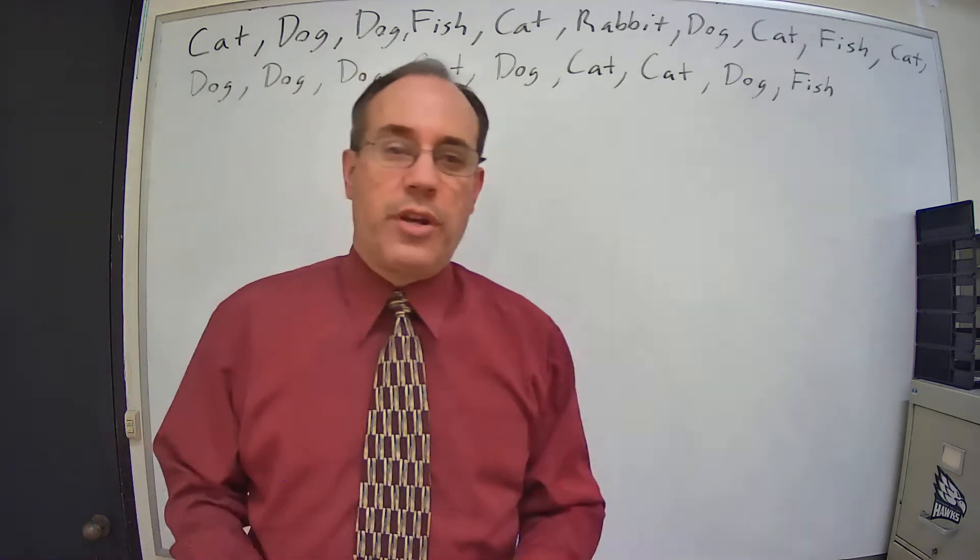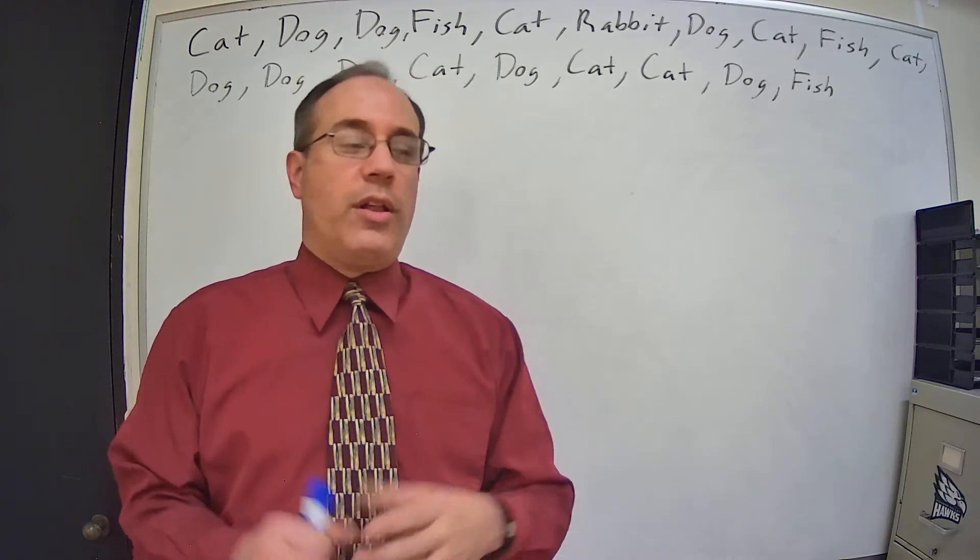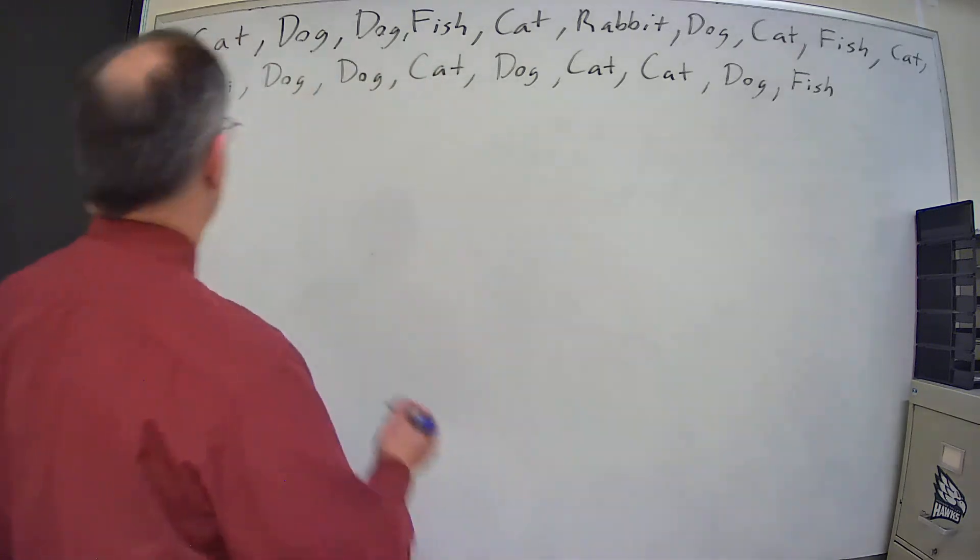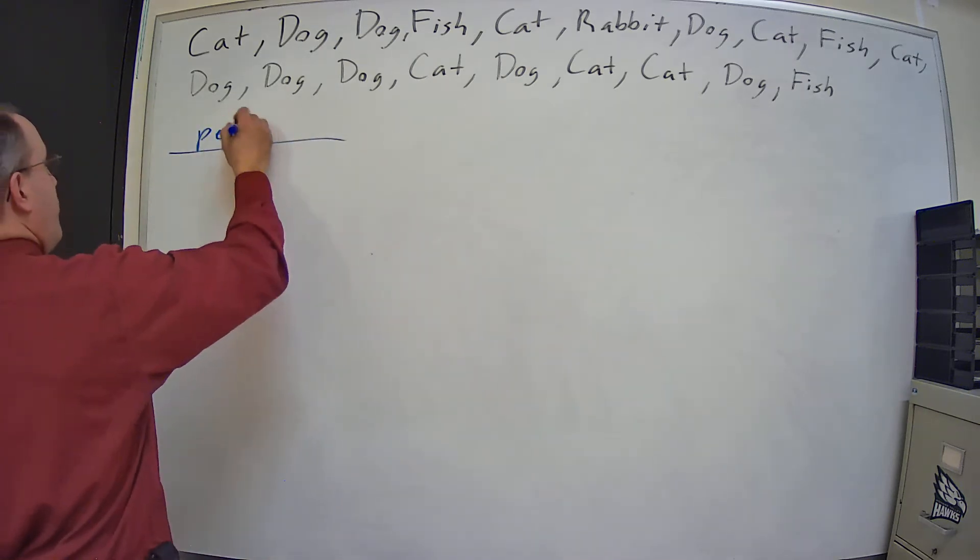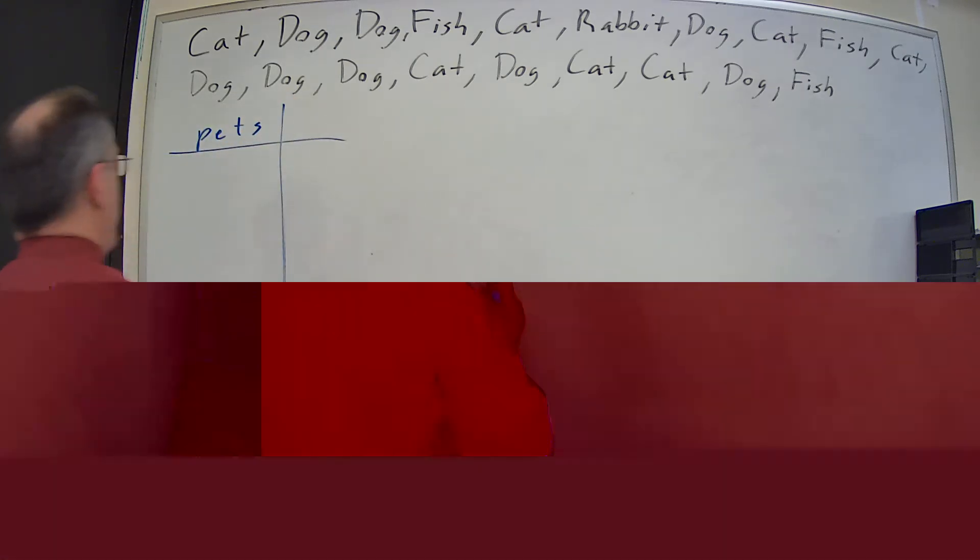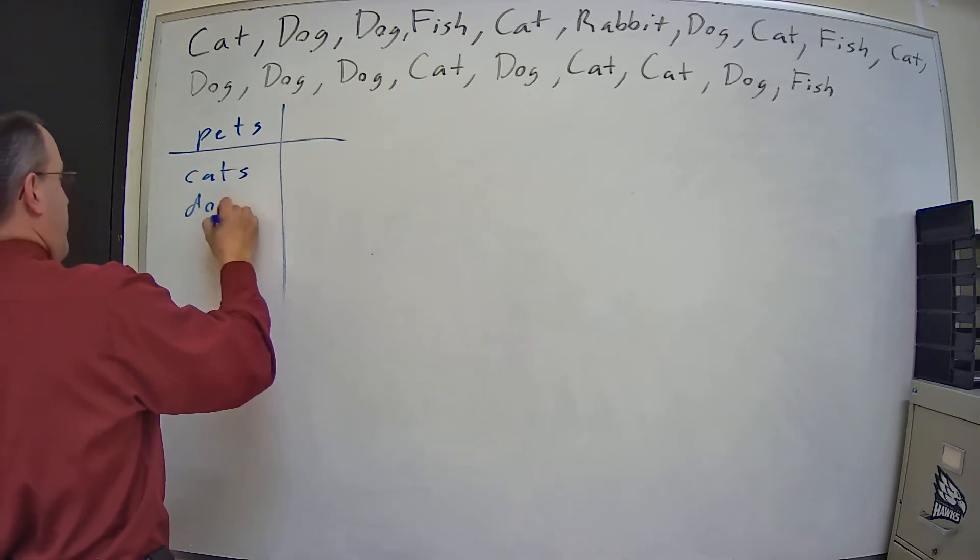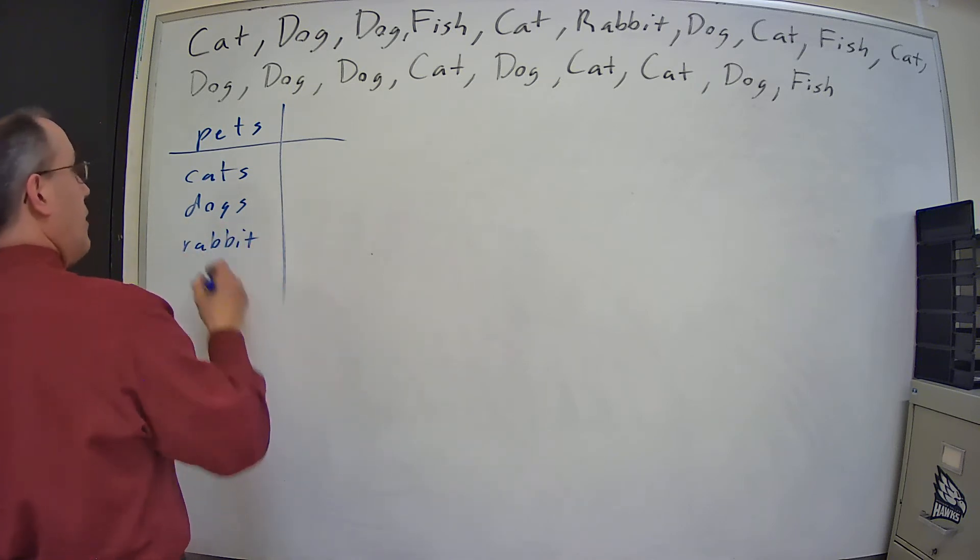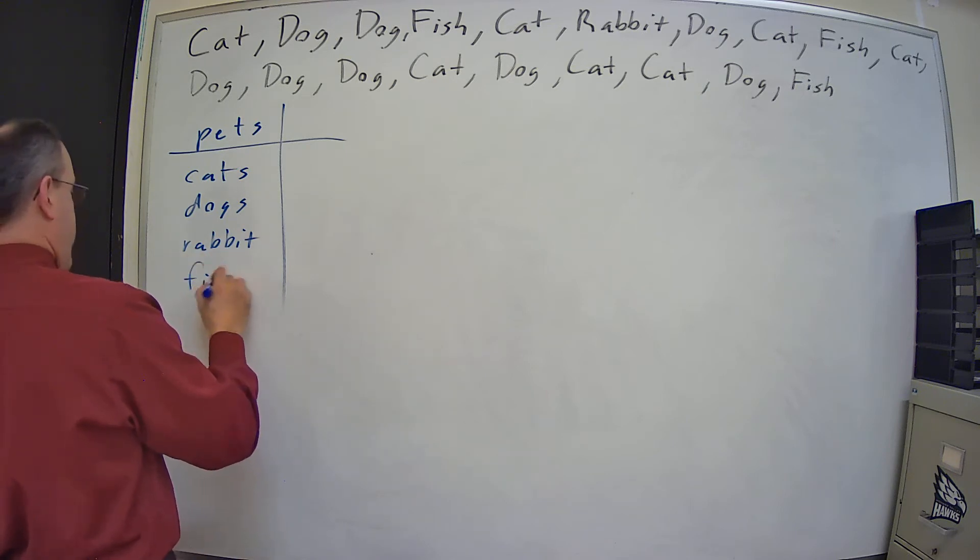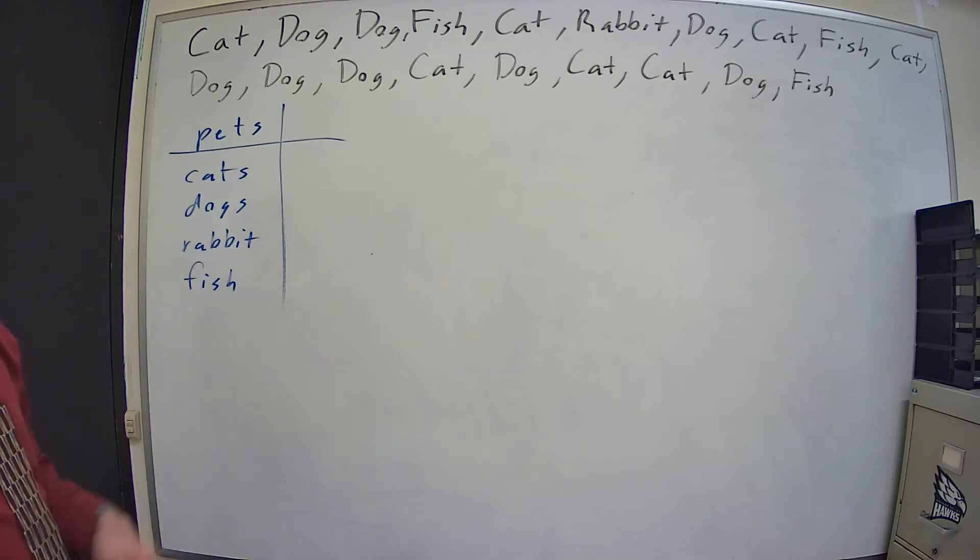So the first thing we're going to do is create a frequency distribution for this qualitative data. We're going to start out, so these are people's pets, and I'm going to break them into categories. So we have cats, dogs, rabbit, and fish. I've got my four categories.